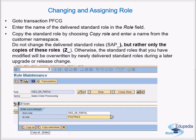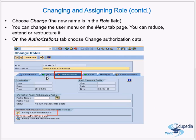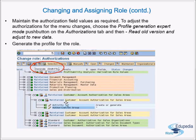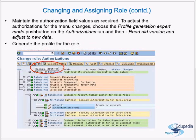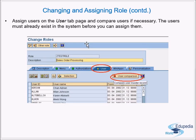Go to the Menu tab page — this is the user menu presented when the user logs on, and you can change it. Next, go to the Authorizations tab, choose 'Change Authorization Data', adjust the authorizations, and generate a new profile. If you made user menu changes, go to Expert Mode for profile generation and choose 'Read Old Version and Adjust to New Data'. Finally, on the Users tab, add or delete users and run a user comparison.